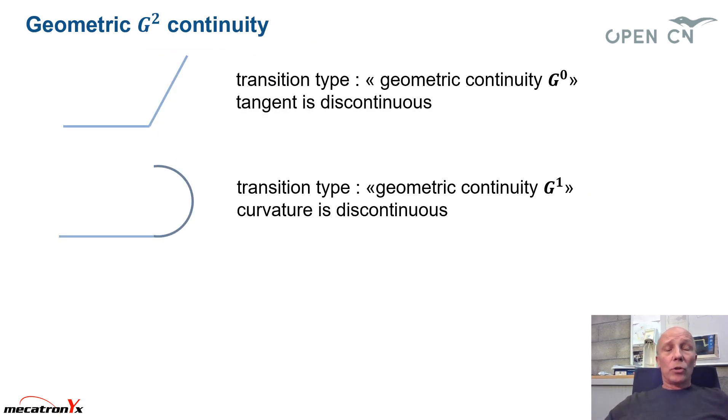Let's speak about geometric continuity. The situation we don't like is this one with the transition here, where the first parametric derivatives is discontinuous. Here we have a jump in curvature. So a discontinuity in the curvature.